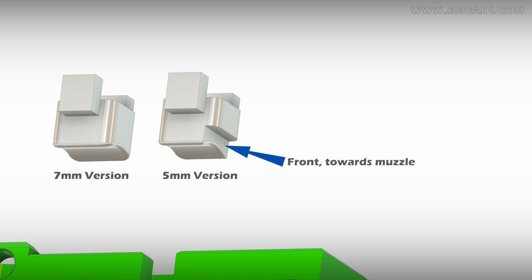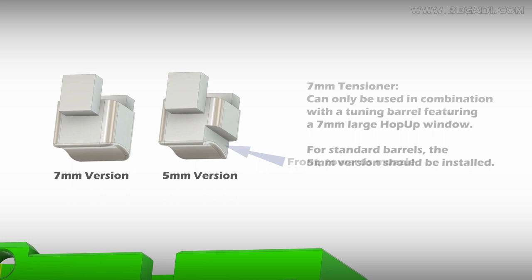When using a 5 millimeters system, ensure the correct alignment of the tensioner. The 7 millimeters version can only be used in combination with tuning barrels featuring a 7 millimeters window.